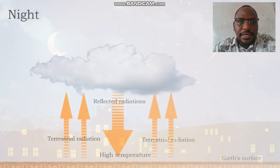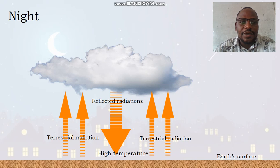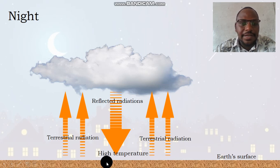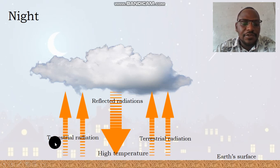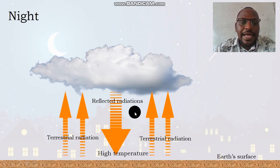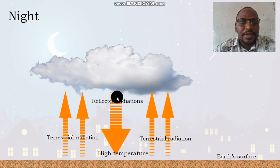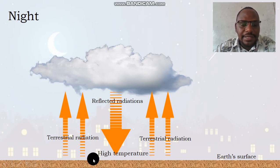Let's look at the night. A night with clouds is different. All the heat energy which was absorbed by the Earth's surface or the ground during the day is now emitted during the night in the form of terrestrial radiations. These terrestrial radiations will be reflected back by the clouds right above the Earth's surface, and the terrestrial radiations are sent back to the Earth's surface, which will definitely mean very high temperatures during the night.